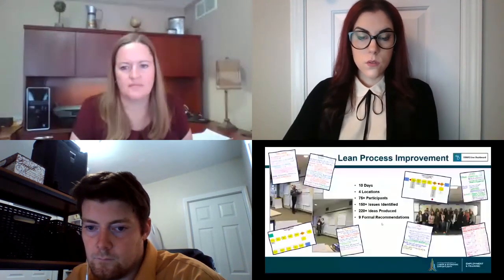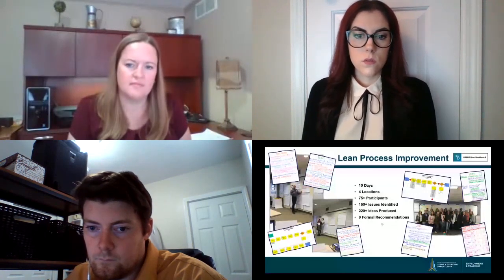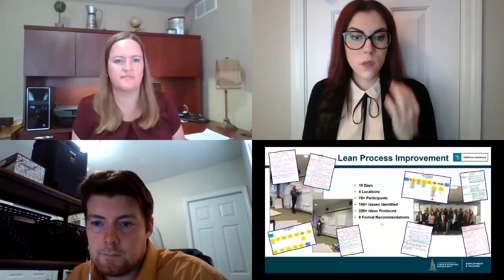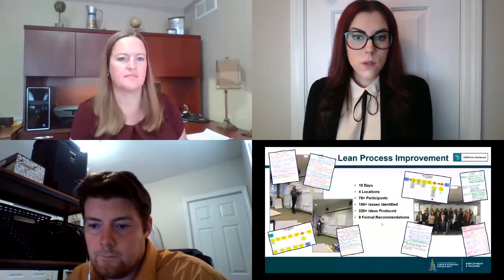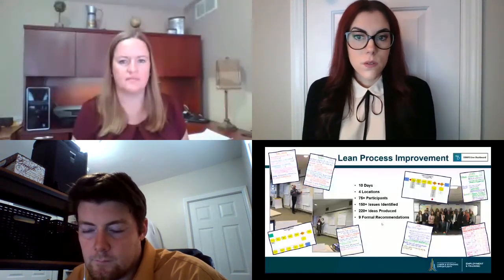We had a lean process improvement process. We talked to several different stakeholders — Michigan Works agencies, partner programs, state policy — and had 10 days of lean process improvement events. They came up with a few issues with our system, and that's okay. We really wanted to get into the heart of what was going on. Over 150 issues were identified, and more importantly, over 220 ideas of how we could change the system to become more flexible, intuitive, and dynamic.